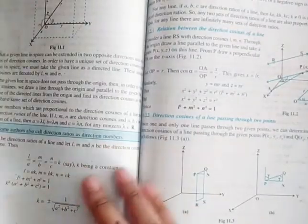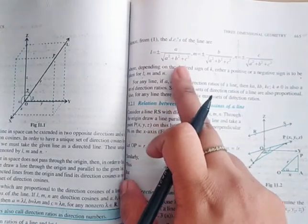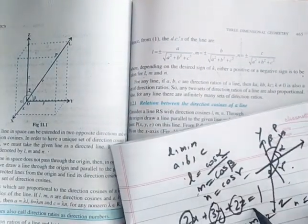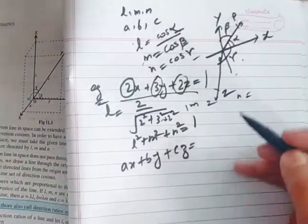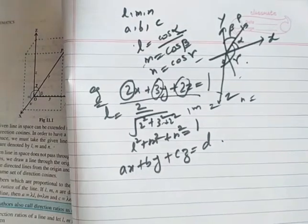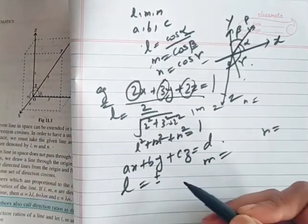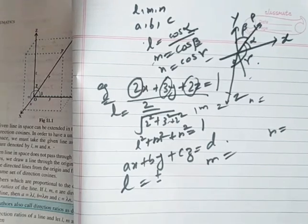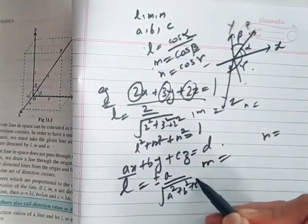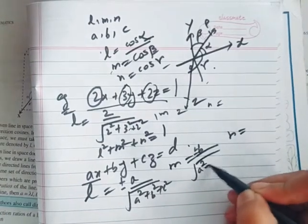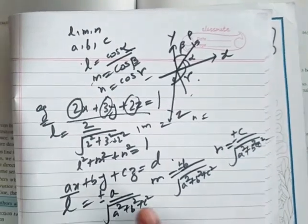Now look at the concept given in your book. The general equation of a plane is ax + by + cz = d. If you are asked to find DCs from this equation, note that the DCs always give answers in both plus and minus signs — the direction can be positive or negative. So: L = ±a / √(a²+b²+c²), M = ±b / √(a²+b²+c²), and N = ±c / √(a²+b²+c²). These are the methods for finding direction cosines.